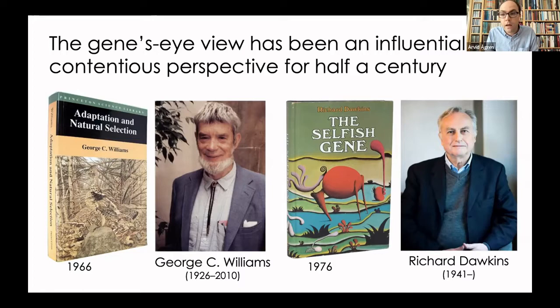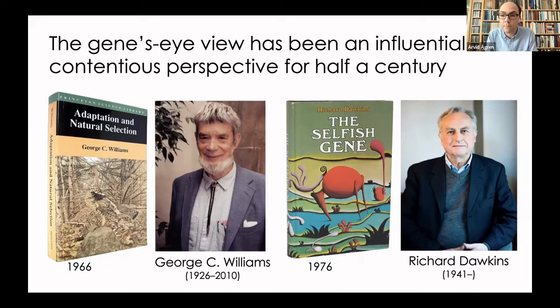Williams clearly articulates what we now know as the gene's eye view of evolution. However, it was a book primarily aimed at a fellow biologist and academic audience, which is why most of us are introduced to these arguments through another book — The Selfish Gene, written by Richard Dawkins, published ten years later — where many of the same ideas are presented in a more lucid and confrontational way.